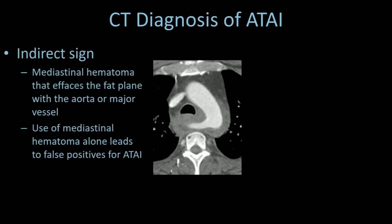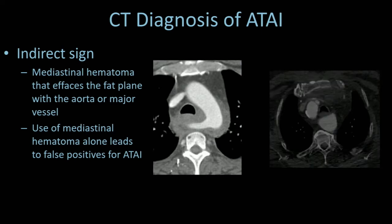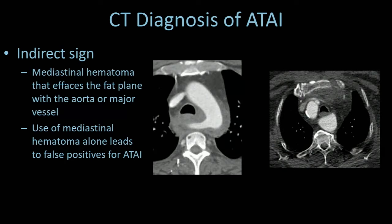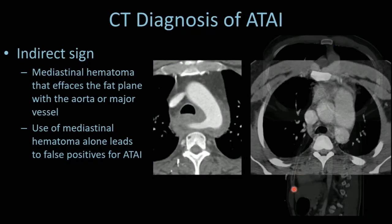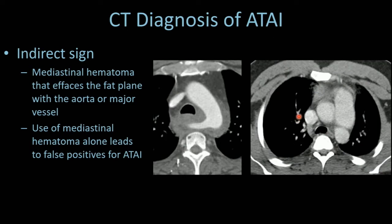The indirect sign of mediastinal hematoma, when used alone, will lead to false positives. You can get mediastinal hematomas from other causes like sternal fractures, vertebral fractures, or sometimes just a mediastinal hematoma not in contact with any vessel due to a small tear of a vein in the mediastinum.